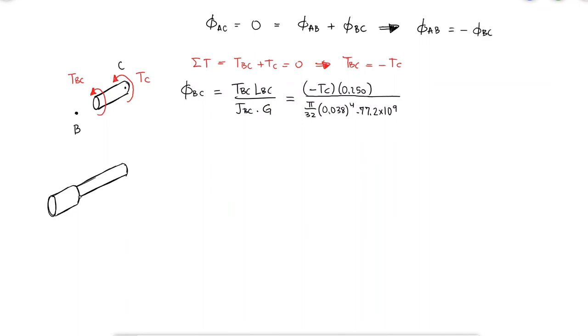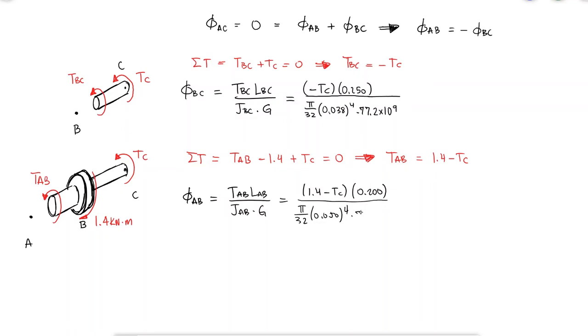By performing a cut between B and A, still from the wall C, we find that the internal torque between A and B is 1.4 minus TC, which goes in the angle of twist expression for phi AB.